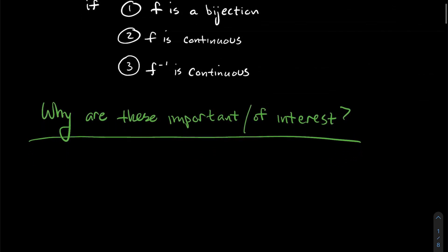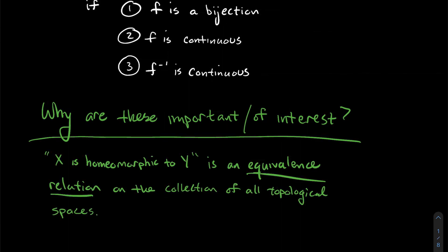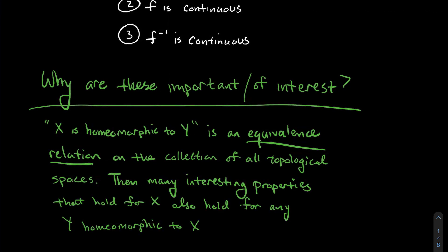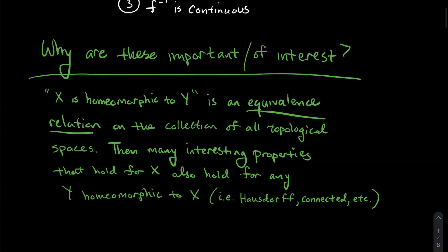Before we get into an example, let's zoom out. Why are homeomorphisms of interest to mathematicians? The relation 'X is homeomorphic to Y' is an equivalence relation on the collection of all topological spaces — it satisfies reflexive, symmetric, and transitive properties. This allows us to say: if X has some important property such as being Hausdorff or connected, then any space homeomorphic to X has that property too. So we can classify big groups of sets and bunch them together, sort of like biologists putting animals into different phylums.